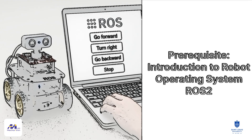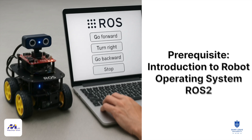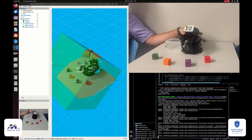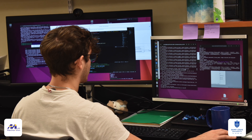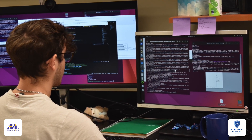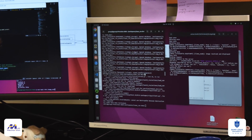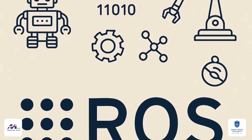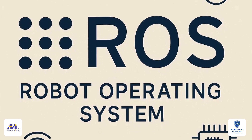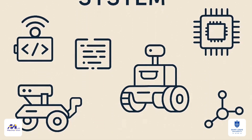This video is part of the prerequisites to my robotics courses, and it will give you a high level introduction to the Robot Operating System. You will understand how to use it during the course projects. The Robot Operating System is a freely available software framework used to control robots. It comprises a collection of software libraries and tools that facilitate the construction and sharing of code among various robotics applications.